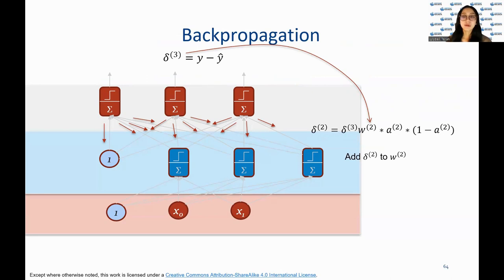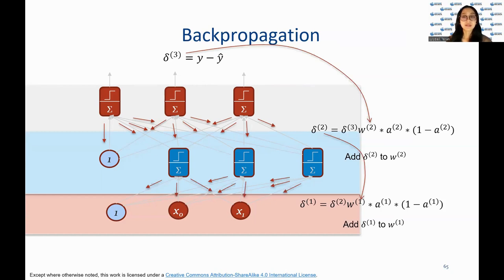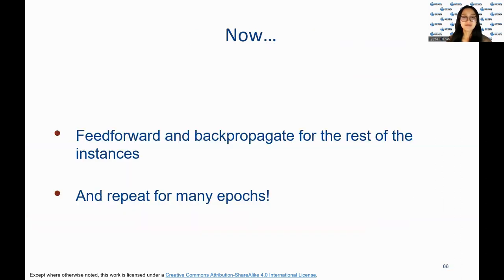Backpropagation is an algorithm used to train neural networks, particularly multilayer perceptrons, also known as MLPs. It involves computing the output of each neuron in a forward pass and then propagating the error backwards through the network, adjusting the weights of the connections between neurons to reduce the error. The algorithm works by computing the gradient of the error function with respect to the weights of the connections, using the chain rule of calculus to propagate the error backwards through the network. In summary, the process of feedforward and backpropagation is used for the remaining instances in the dataset, then repeating the process for many epochs.